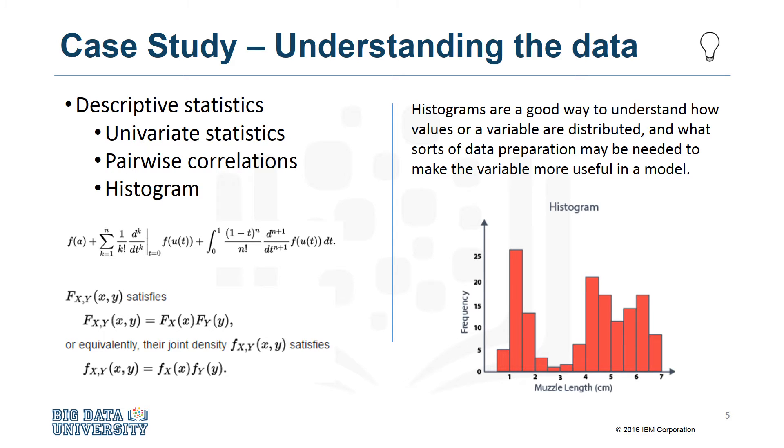For example, for a categorical variable that has too many distinct values to be informative in a model, the histogram would help them decide how to consolidate those values.